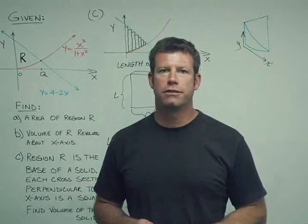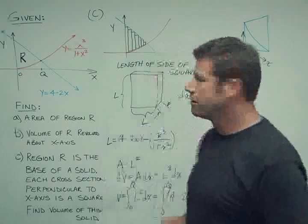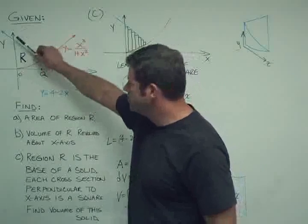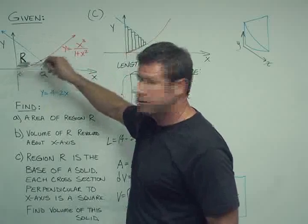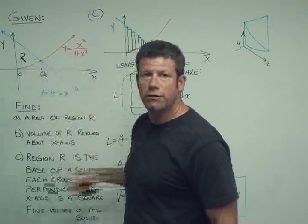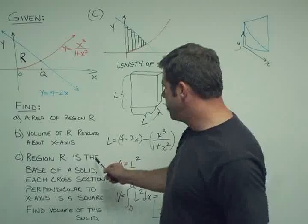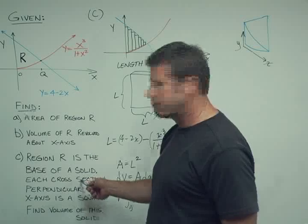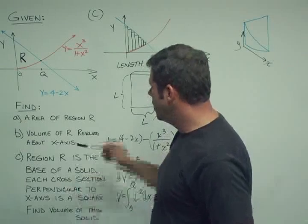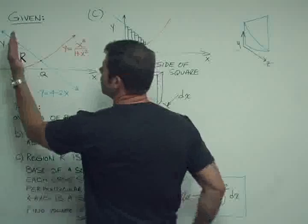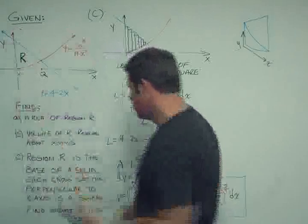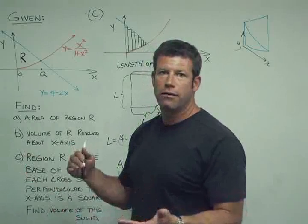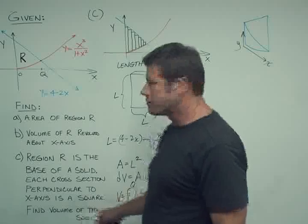Let's solve Part C of this problem. We're given this region R bounded by this line and this curve and the y-axis, sort of triangular in shape. We're instructed that it's the base of a solid and each cross section in the solid perpendicular to the x-axis, each cross section coming out of the board, is a square. Both the base and the height are equal. Find the volume of this solid.